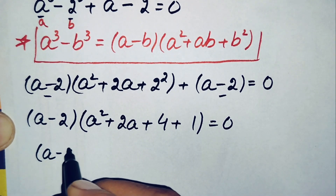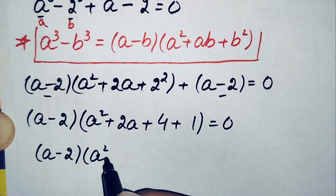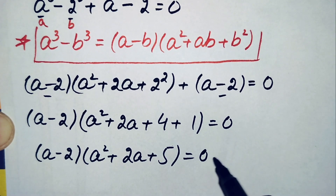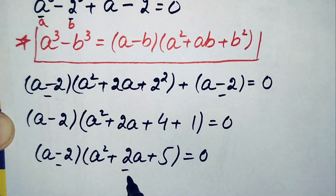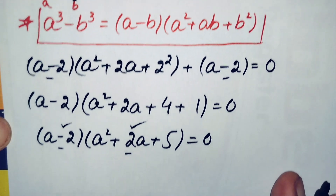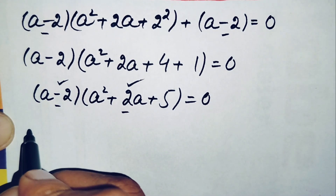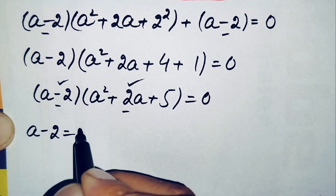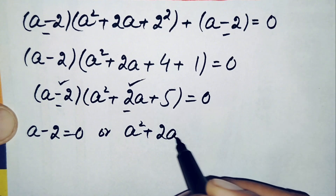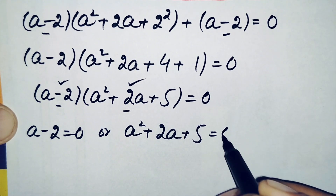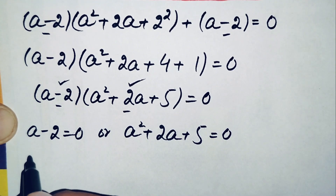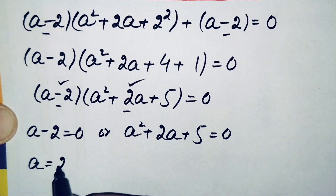So further this equation will become a minus 2 times a square plus 2a plus 5 is equal to 0. Now here the product of this linear and this quadratic equation is 0, so either this linear equation will be 0 or this quadratic equation will be 0. So from here we will get two equations. The first equation is a minus 2 is equal to 0, and the second equation is a square plus 2a plus 5 is equal to 0. First we will solve the linear equation: moving 2 to the right hand side gives a is equal to 2.